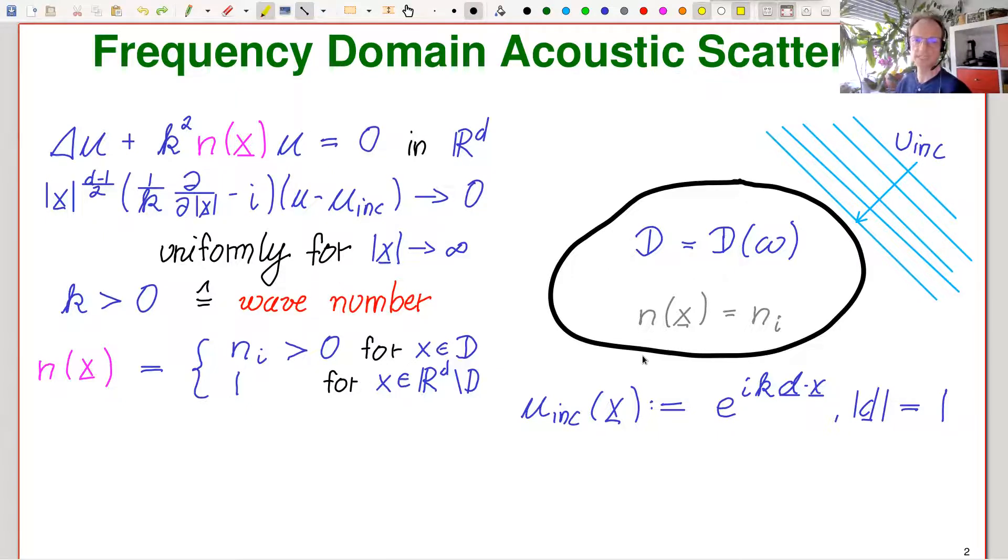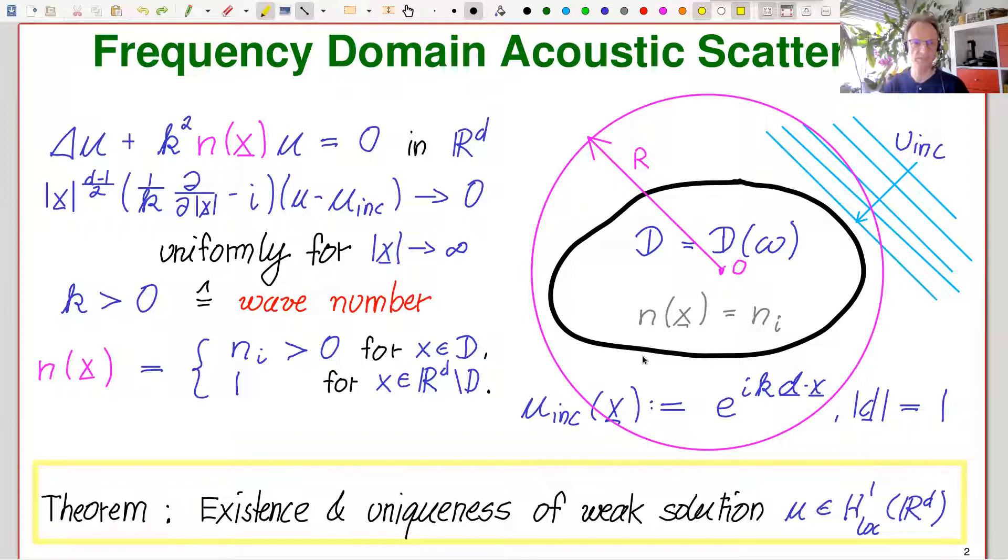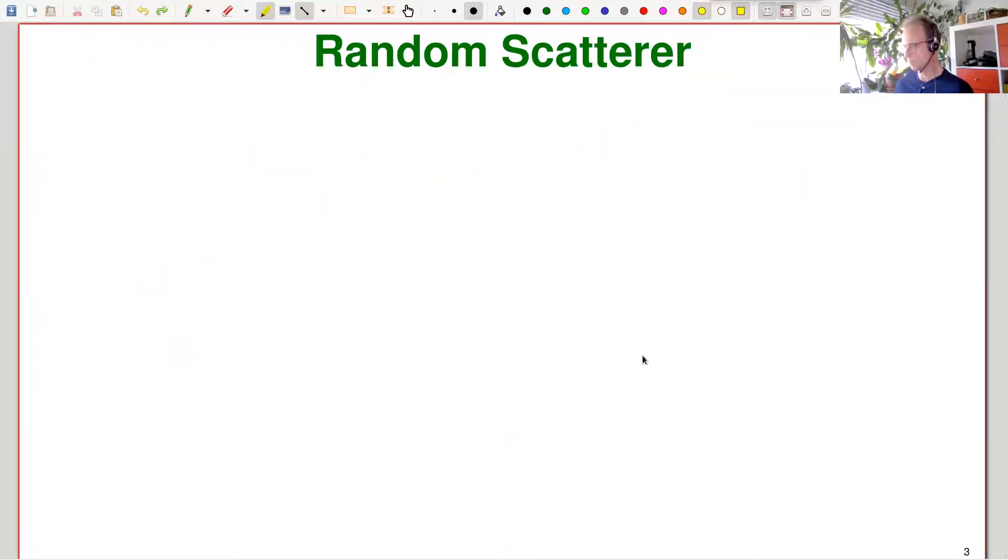Later, I'm going to put everything into a big ball, and on its boundary I'm going to assume perfect absorbing boundary conditions. This will confine the scattering problem to a bounded domain. There's a large body of theory about this simple scattering problem. In particular, we know existence and uniqueness of weak solutions in H1 local. What about these shape perturbations of the scatterer? This is where the shape uncertainty quantification comes into play.